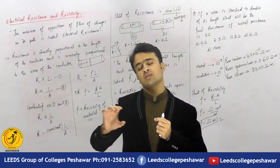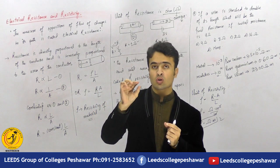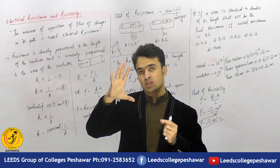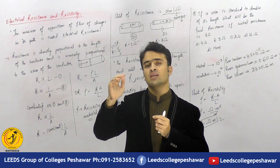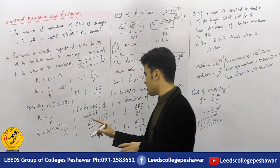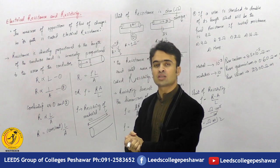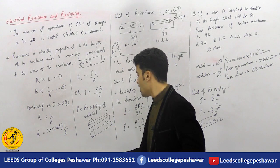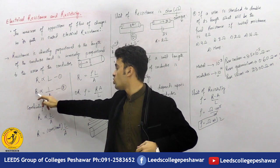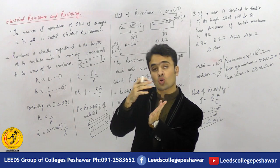Talking about the flow — we can use the analogy of water flow through a narrow pipe versus a wide pipe. The same applies to the flow of electrons. Resistance is proportional to length, and inversely proportional to the cross-sectional area. These give us equation one and equation two.